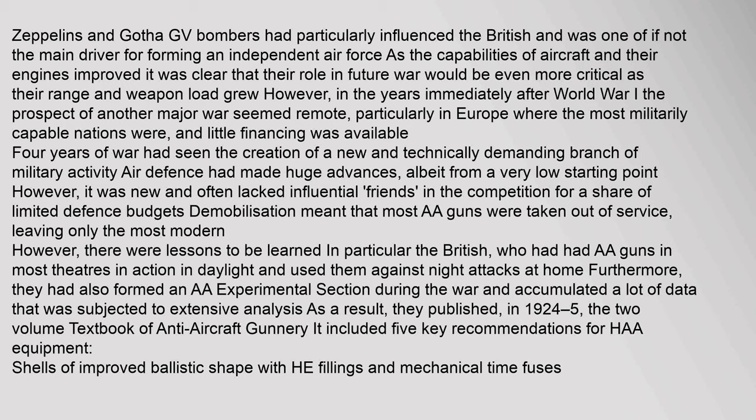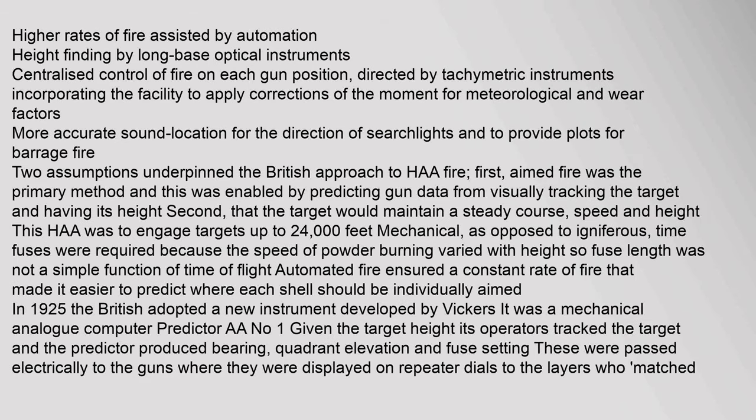The British published in 1924–25 the two-volume Textbook of Anti-Aircraft Gunnery, which included five key recommendations for heavy AA equipment: shells of improved ballistic shape with HE fillings and mechanical time fuses; higher rates of fire assisted by automation; height finding by long-base optical instruments; centralized control of fire on each gun position directed by tachymetric instruments incorporating meteorological and wear factor corrections; and more accurate sound location for the direction of searchlights. Two assumptions underpinned the British approach: aimed fire was primary, enabled by predicting gun data from visually tracking the target; and that the target would maintain a steady course, speed, and height.